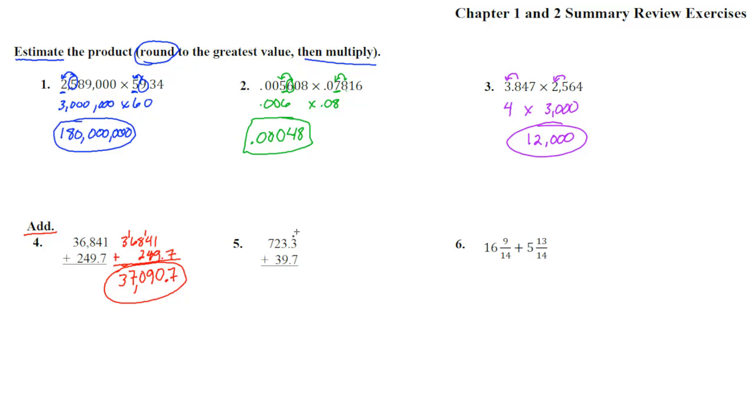Next one, number 5. The decimals are already lined up. 3 plus 7 is 10, carry the 1. 1 plus 3 is 4, plus 9 is 13. Decimals come straight down, carry the 1. 1 plus 2 is 3, plus 3 is 6. And 7 plus 0. 763.0, so that's just 763. Great.